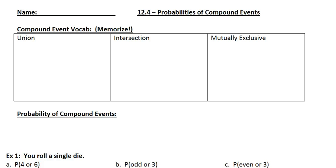All right everybody, welcome to 12.4, probabilities of compound events. This section is still talking about probability, but now instead of just making a single sock draw or a single dice roll, I'm going to make a single dice roll and I want more than one thing to possibly happen. So for example, I'm going to roll a die and I want a four or a six instead of just looking for one thing. And it might sound easy, but it does actually complicate things. To start off with, I have some vocabulary that you need to know.